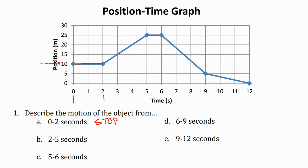What about two to five seconds? We can see this leg looks different — it's increasing. At two seconds, I'm 10 meters from home. At five seconds, I'm 25 meters from home. So I got further away from home. We could say that we were moving away from home between two and five seconds. Here you're stopped, and here you're moving away.